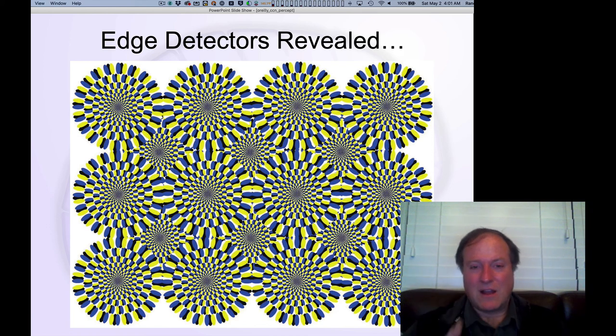And so in this case, actually, your visual saccades, as you look around, create this illusion of motion as these blue and yellow contrasts sweep across your retina as your eyes move.